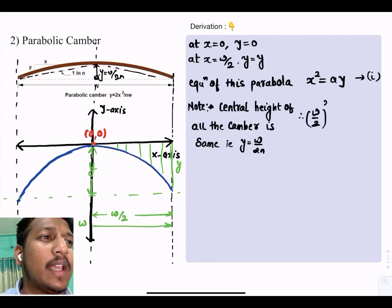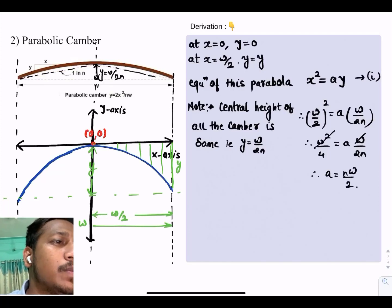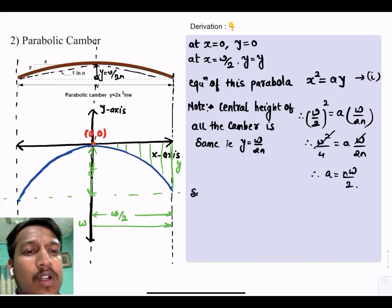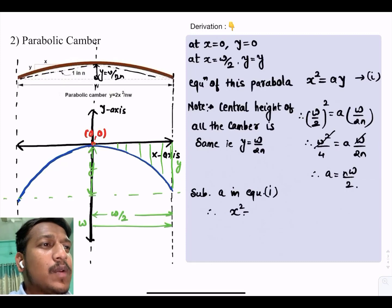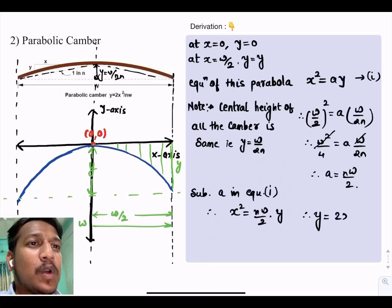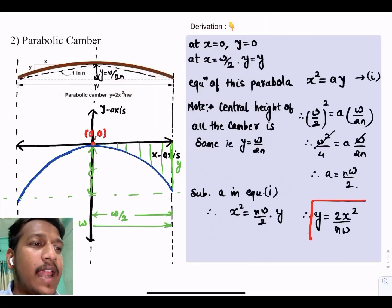Substituting y equals w divided by 2n and x equals w by 2, we get (w/2)² equals a × w/(2n). Therefore w²/4 equals a × w/(2n). So a equals nw/2. Substituting the value of constant a in the main equation, x² equals nw/2 × y. Therefore y equals 2x² divided by nw.